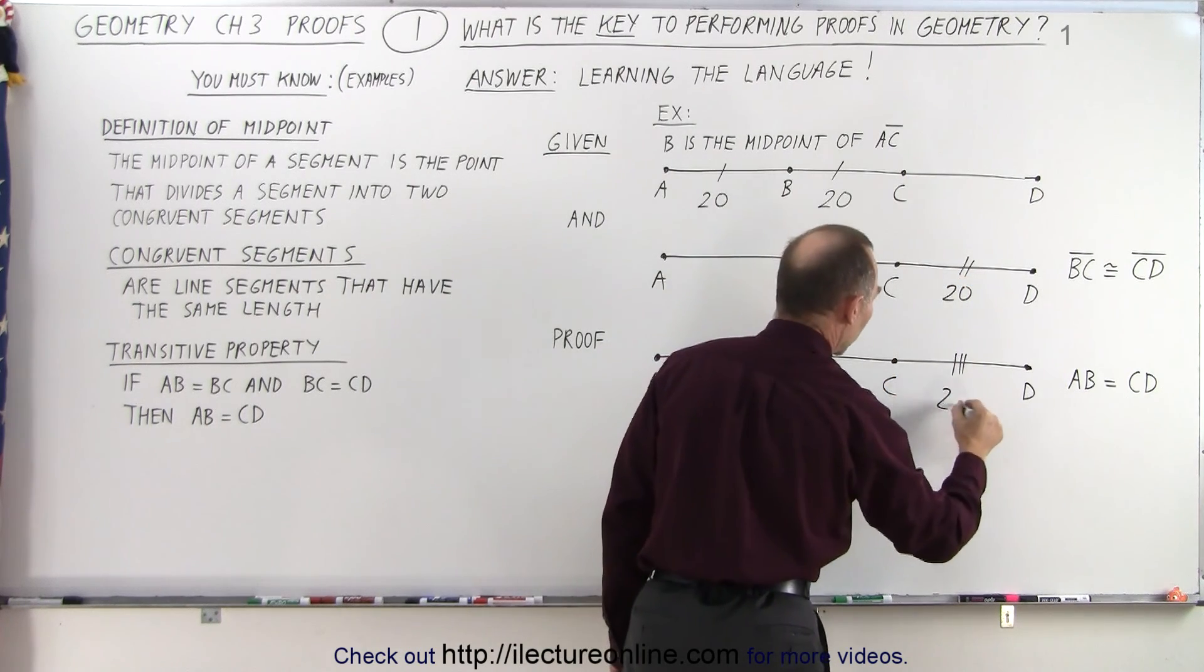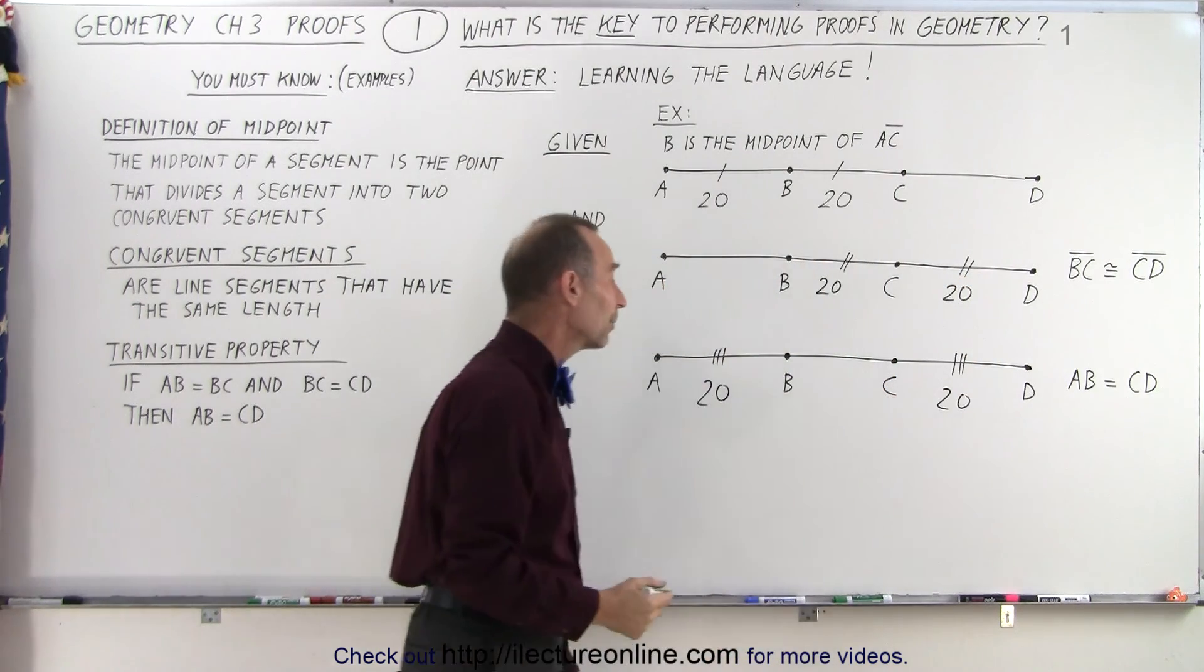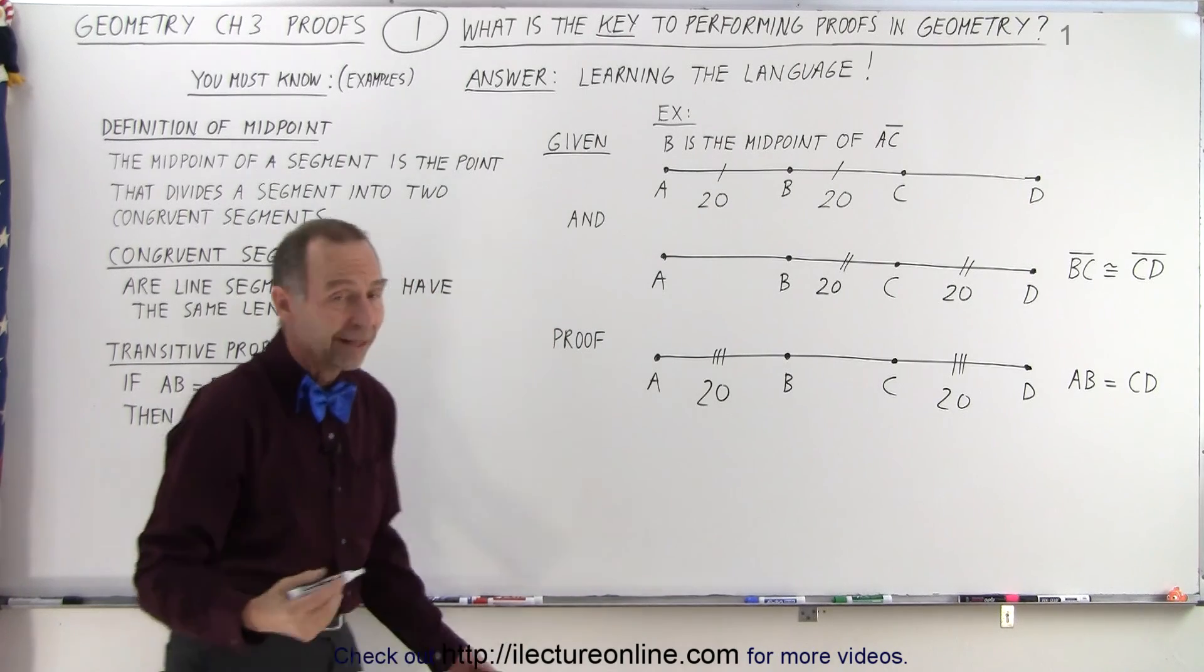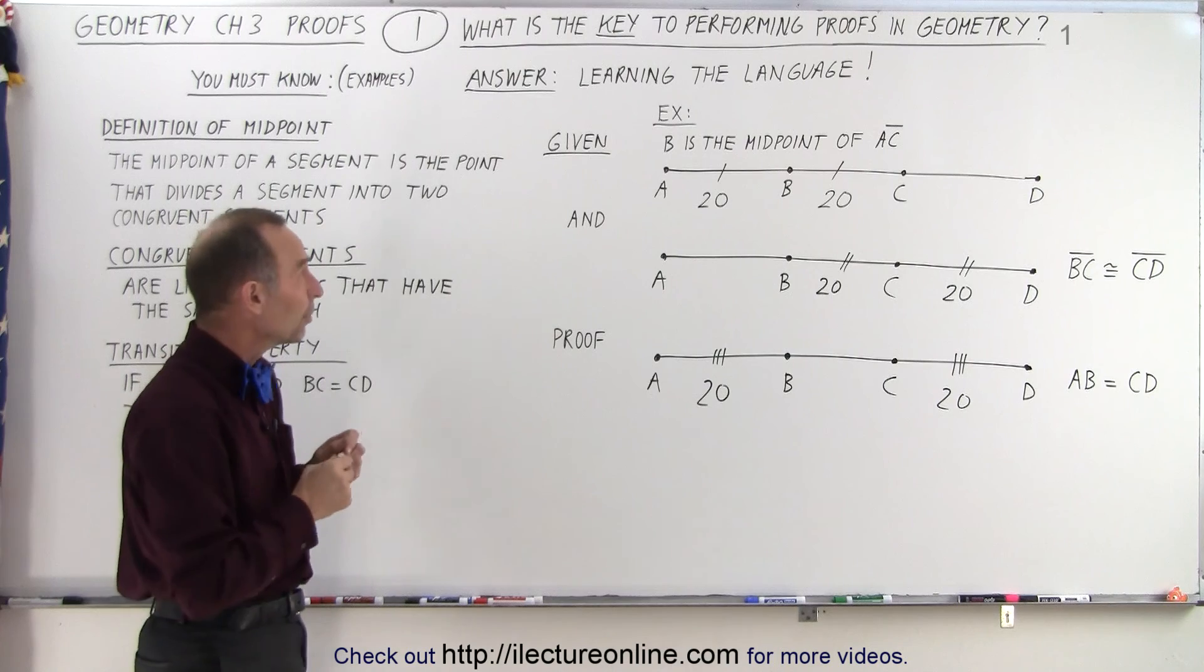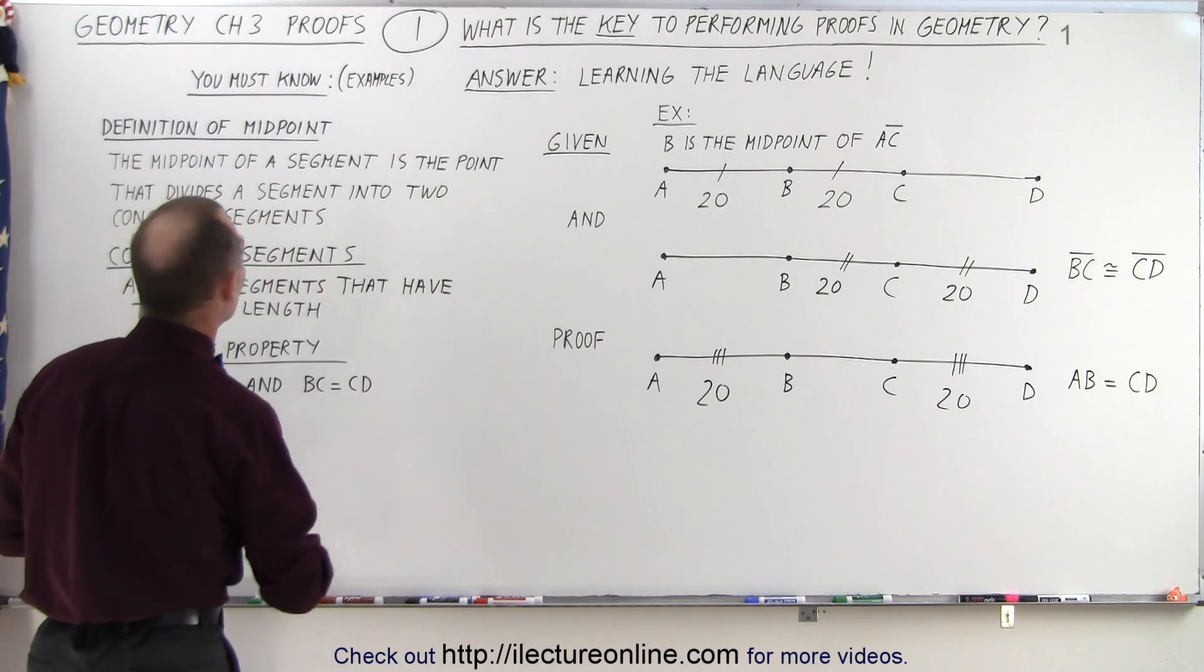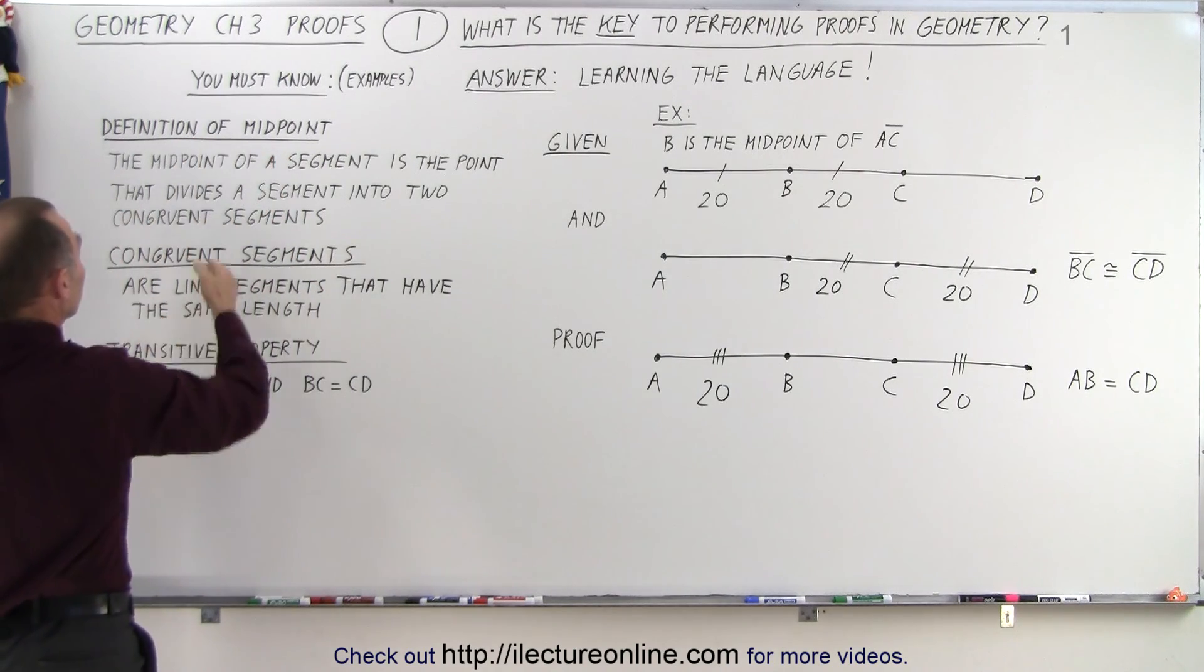So, it doesn't seem that hard to prove that line segment AB has the same length as line segment CD. But how do you do it in geometry? Well, in geometry, you need to know the language. You need to know, for example, the following definitions.